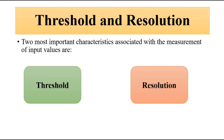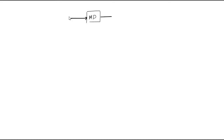Before we discuss dead zone and dead time, we must quickly review the related concepts of threshold and resolution, which we have discussed previously. The measuring system or any measuring device follows a particular input-output relationship curve, also called the calibration curve. We provide input to it and get output, and both input and output fall within a certain range specified by low and high values.